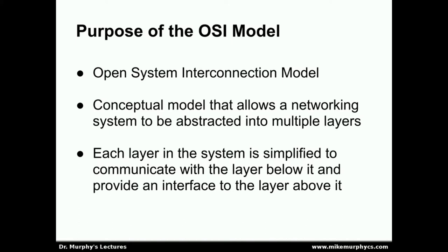The purpose of the Open System Interconnection model, or the OSI model, is to provide a conceptual model that allows the networking system to be abstracted into multiple layers. Each layer is simplified to communicate with the layer below it and provide an interface to the layer above it. This conceptual model simplifies the way we design, communicate, and think about networking systems by separating details into discrete layers, where each layer maintains a certain amount of independence from the others.